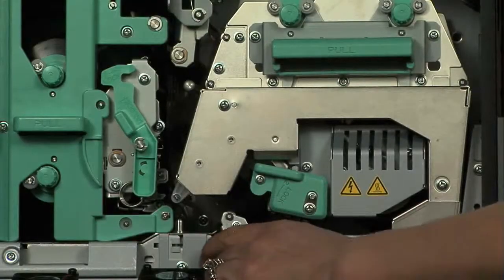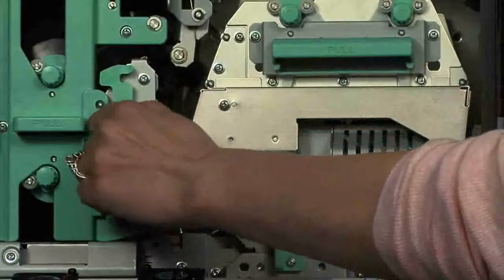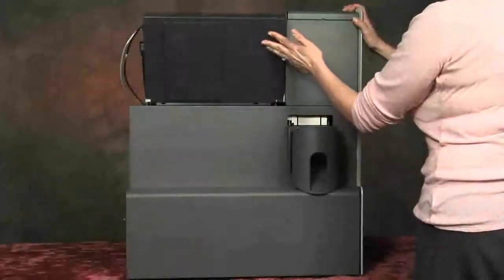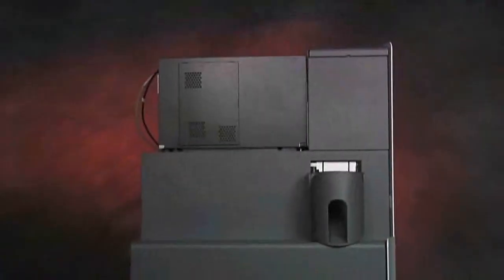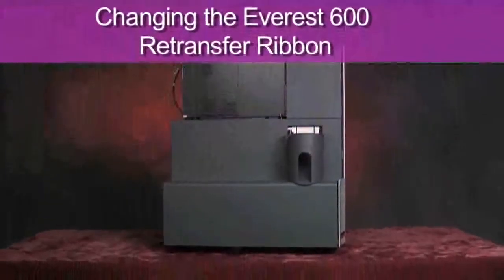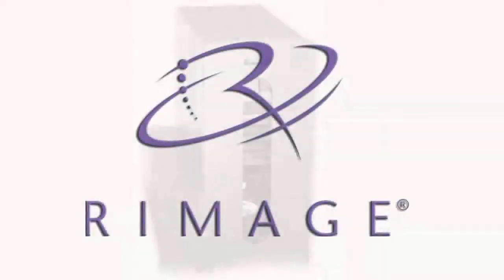Move latch 3 all the way to the right. Turn latch 2 counterclockwise. Turn latch 1 clockwise. Close the printer door.